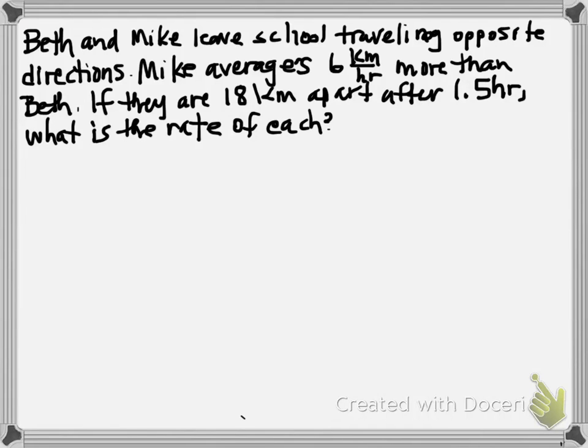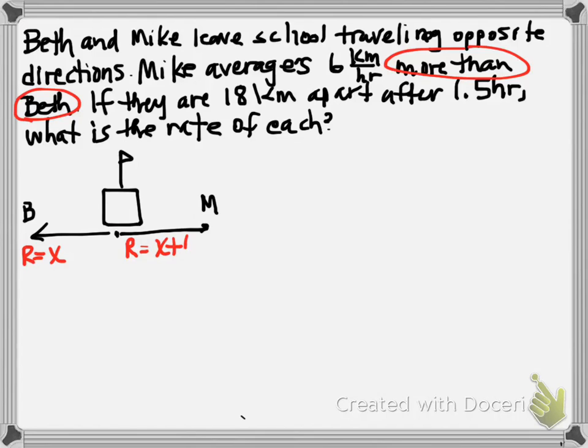Okay, so they leave school. Let's draw a picture. That's my beautiful school. We've got Beth going one direction and Mike going in another direction. Now, we know that Mike averages six kilometers more than Beth. Since Beth is mentioned at the end, then we're going to let Beth's rate be x. And Mike's rate is going to be six more than that. So we're going to take x plus six.